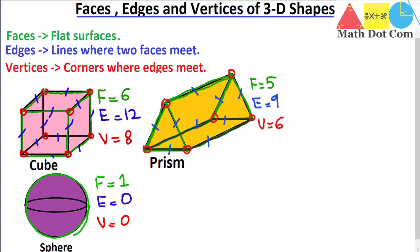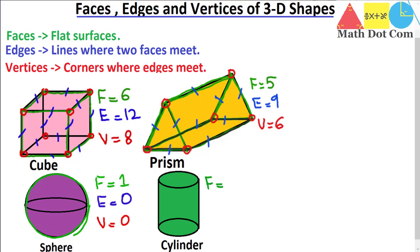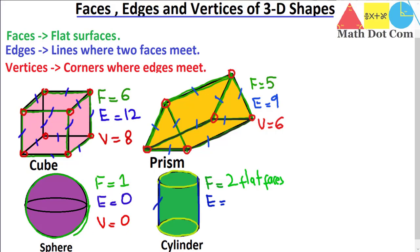The next three-dimensional shape is the cylinder. It has two flat faces — one on top and one on the bottom — and one curved face. So F equals two flat faces. It has two edges where the flat faces meet the curved surface. And a cylinder has zero vertices — no corners. Keep this in mind: a cylinder has no corners but one curved face.